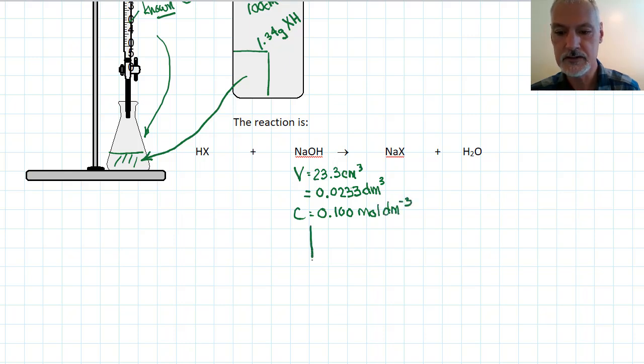From that information, we can determine the number of moles from concentration times volume, just multiplying these two quantities together. And that gets me 0.00233 moles.